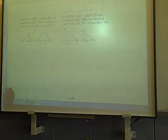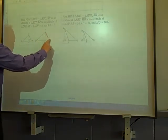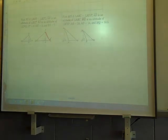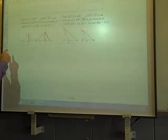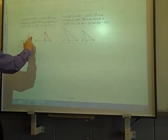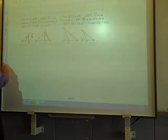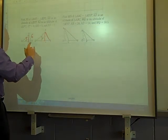Find FG. Where is FG? Right here. If triangle RST is similar to triangle EFG, SH is an altitude of RST and FJ is an altitude of EFG, so these are the altitudes. And ST is 6, SH is 5, FJ is 7.